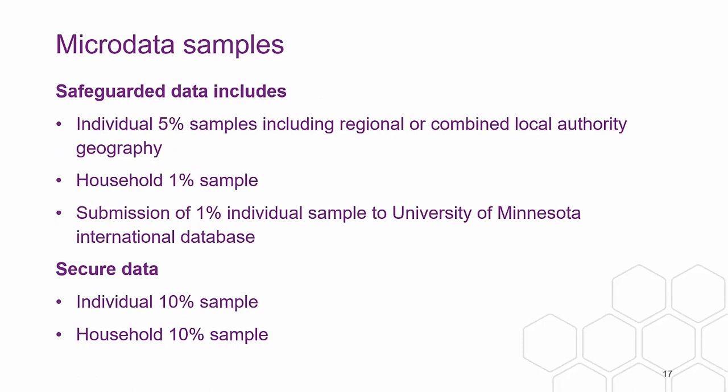The micro data consists of samples of individual records at regional level, covering around 120 variables. There are 5% samples at regional and combined local authority geographies, a 1% household sample, and a 1% individual sample sent to the University of Minnesota as part of an international census micro database. Safeguarded data requires registration with the UK Data Service. In secure data, there is an individual 10% sample and a household 10% sample, accessed through secure facilities at either ONS or the UK Data Service.